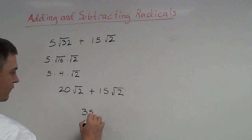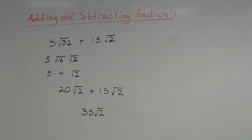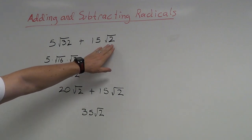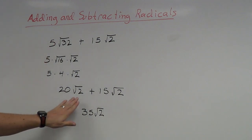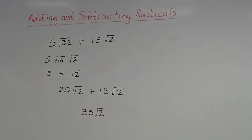Now I have 20 root 2 plus 15 root 2 — both have root 2, so I add the coefficients: 20 plus 15 gives me 35 root 2, and that's the simplified answer. To recap: when adding or subtracting radicals, make sure you have the same radical and then add or subtract the coefficients. If the radicals aren't the same, simplify the larger one down as far as possible before deciding whether you can combine the terms.